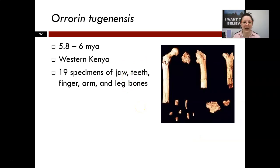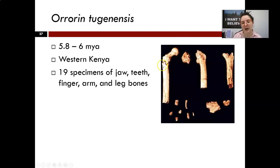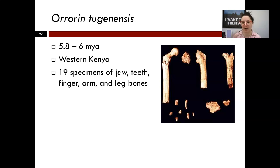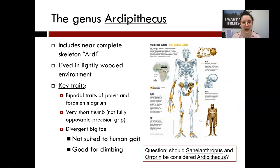Another candidate dating to a bit more recently is Orrorin tugenensis, or the Millennium Man, from western Kenya. In this case we have not only cranial fragments but also some post-cranial remains, including part of the femur, so we've been able to look at post-cranial anatomy. We see some potential indicators of bipedalism, but also things like really long curved finger bones more indicative of brachiation. It's a potential candidate for an early hominin, but the jury is still out as to whether this genus should be included.